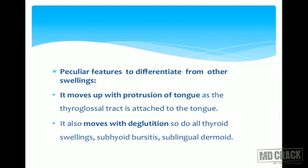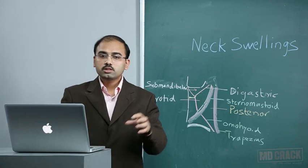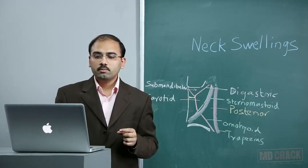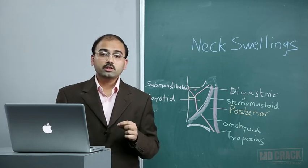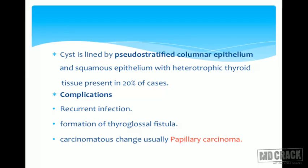The peculiar distinguishing feature of thyroglossal cyst is that it moves with protrusion of the tongue, as the thyroglossal tract is attached to the tongue — it is the only swelling that does this. Apart from tongue protrusion, other swellings that move with deglutition include thyroid swellings, subhyoid bursitis, and sublingual dermoid. The cyst is lined with pseudostratified columnar epithelium and squamous epithelium, with heterotopic thyroid tissue present in 20 percent of cases.